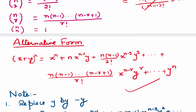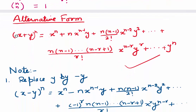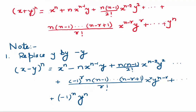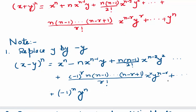Now, if I replace y by minus y, what will happen to the formula? If I replace y by minus y, we will have a minus sign. The next term has y squared, so replacing y by minus y, the sign will remain plus. You can see alternately we have plus and minus signs in this formula: plus, minus, plus, minus. All these terms are alternately plus and minus, and the last term will be minus 1 to the power n times y to the power n.